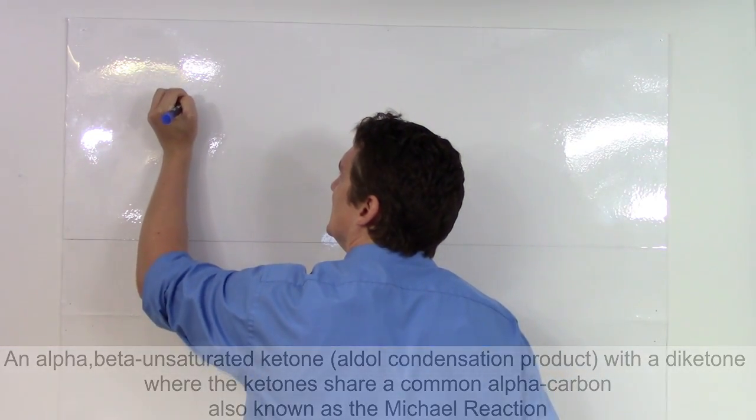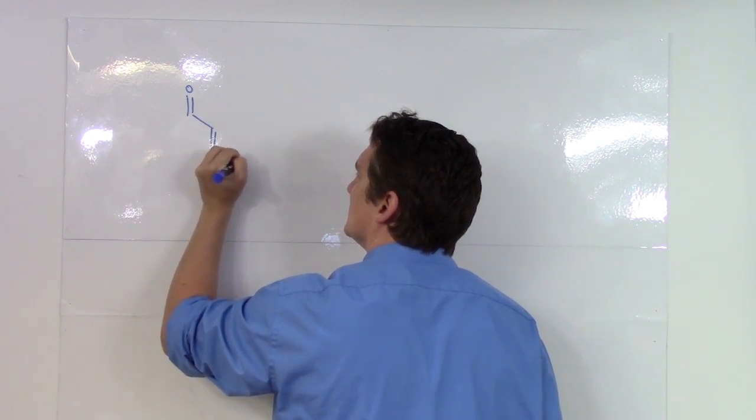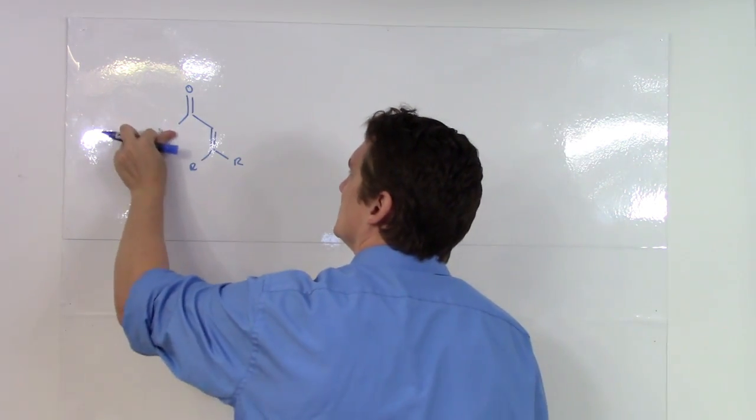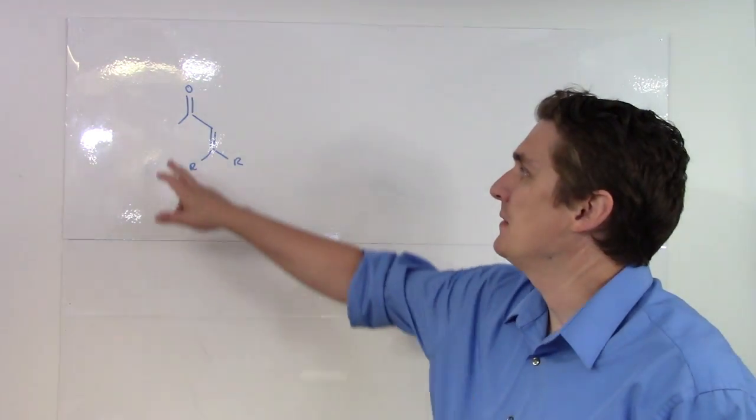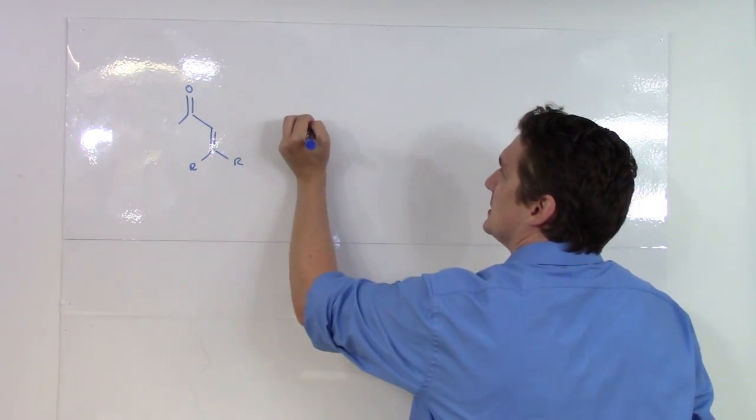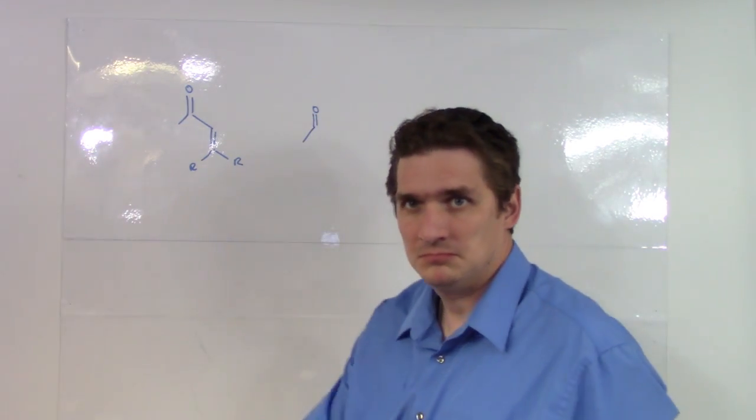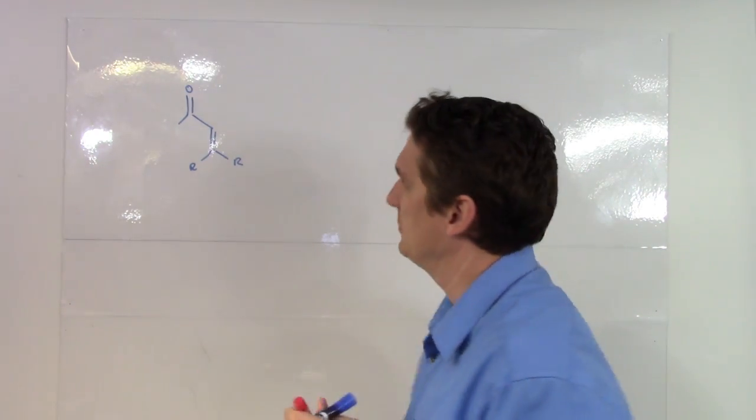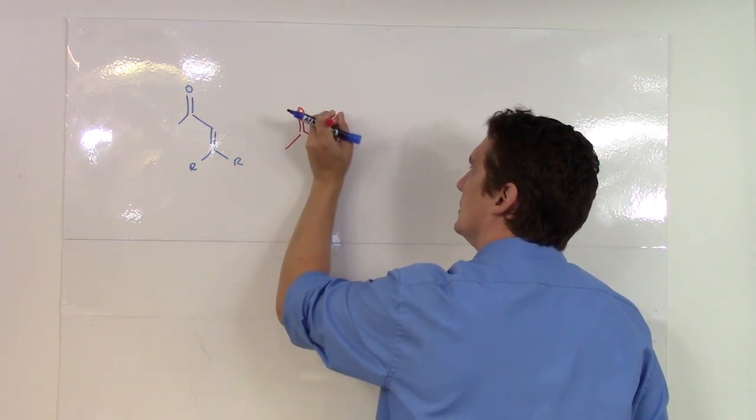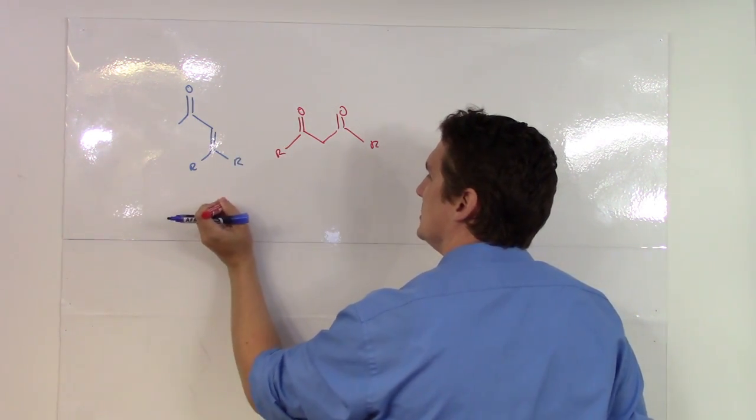Let's say we have an alpha, beta unsaturated—and there is a reason I'm leaving that out there. I do need a hydrogen on this one—alpha, beta unsaturated ketone plus a diketone. Put this in red for you. All under basic conditions.